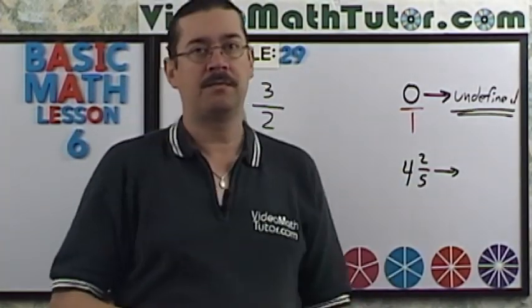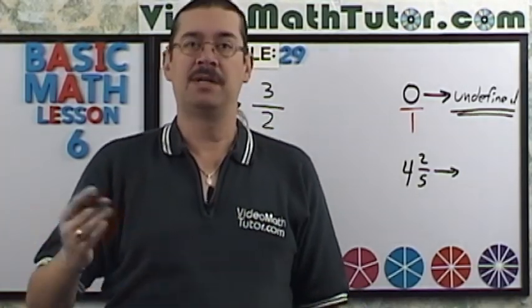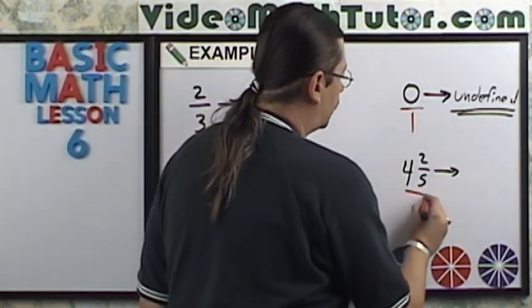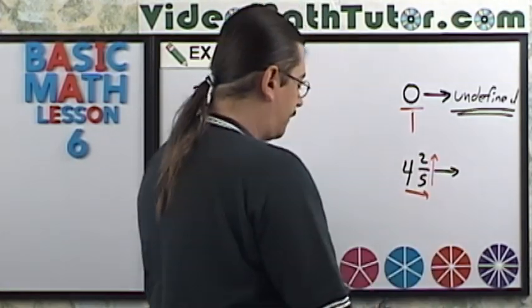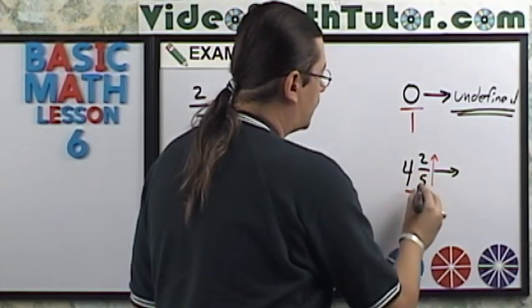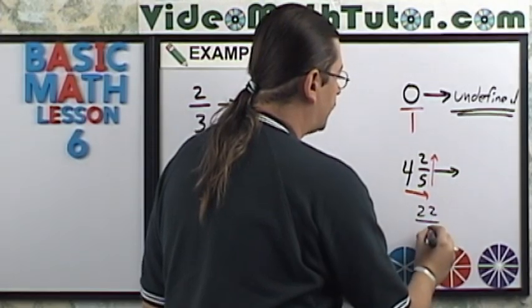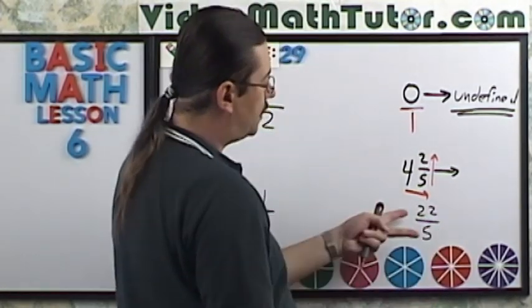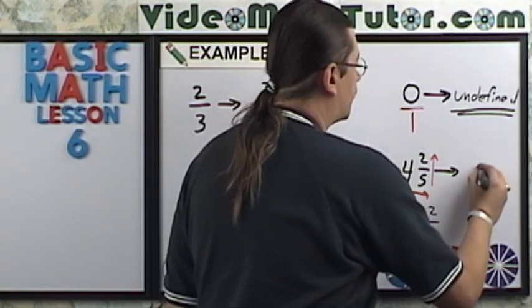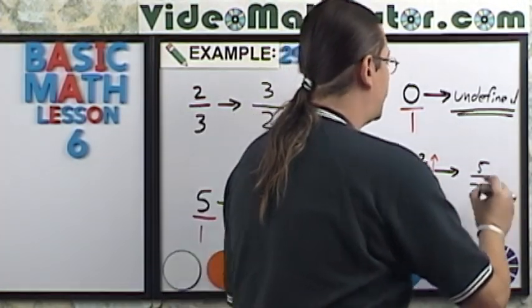And for this last one, we need to change our mixed number to an improper fraction. So we're going to multiply and then add. So four times five is 20 plus two. You're going to get 22. The denominator stays the same. So if you switch this around, we're going to get five over 22.